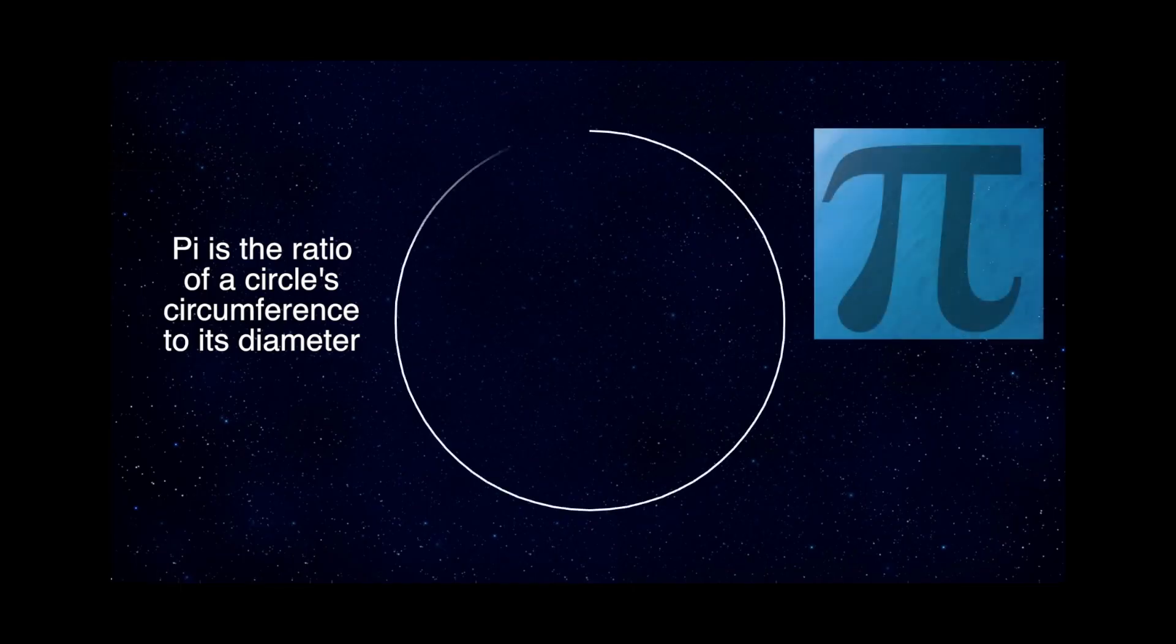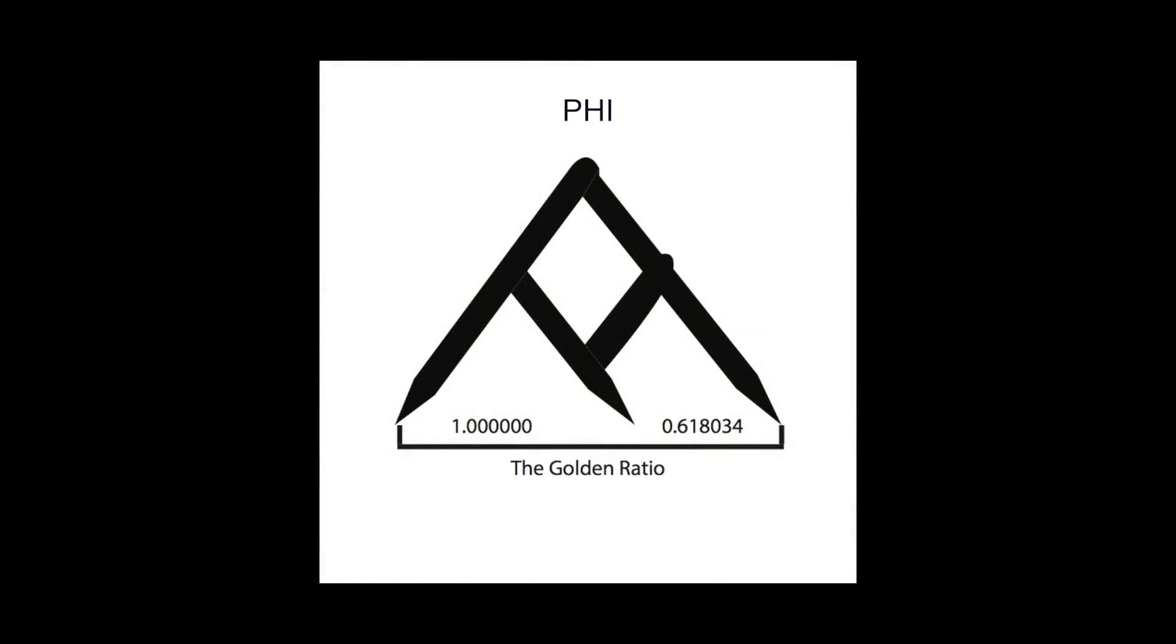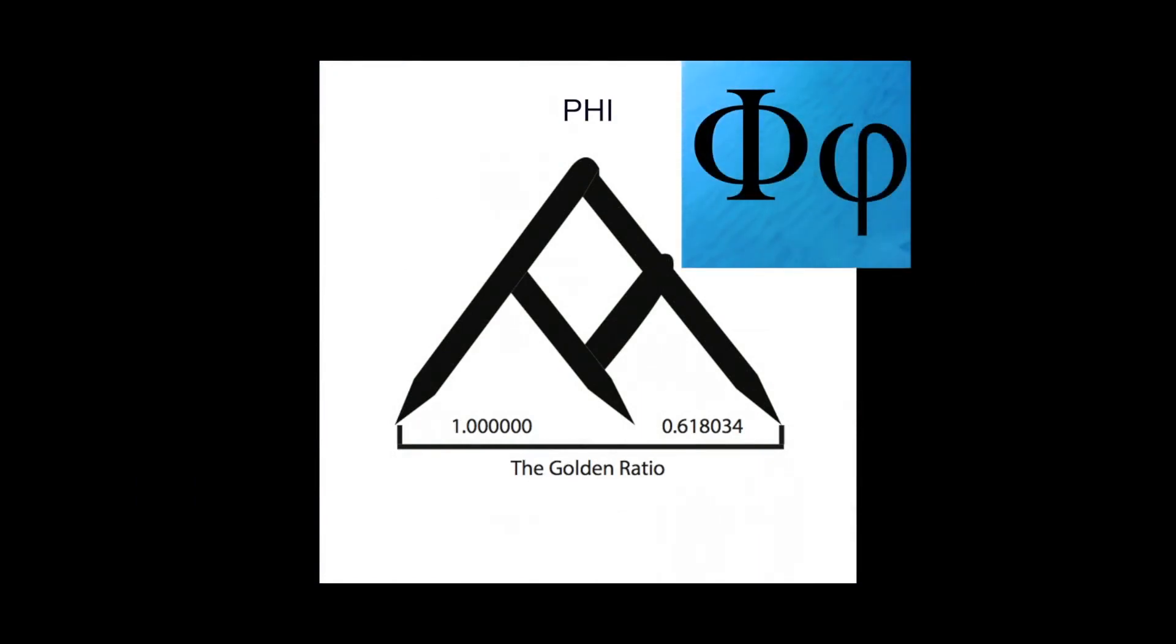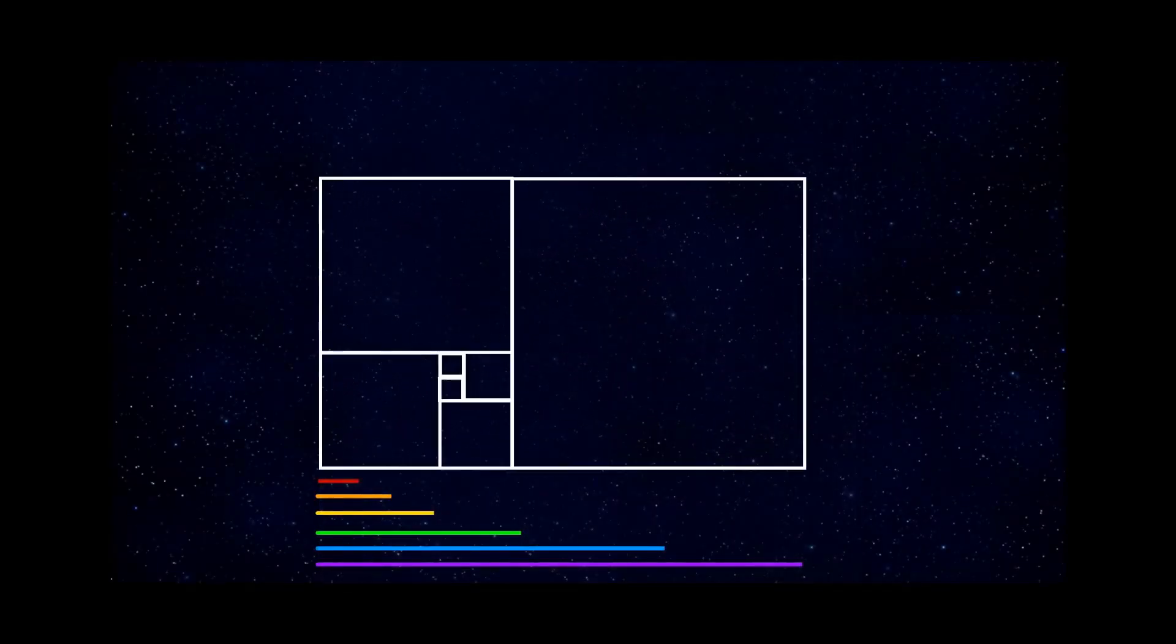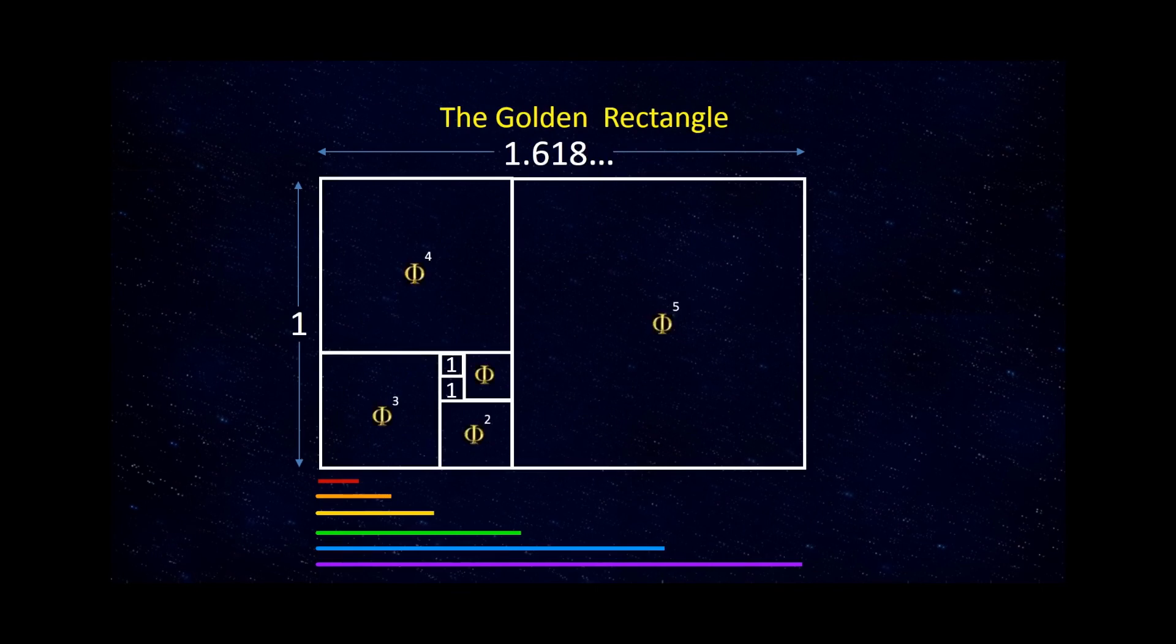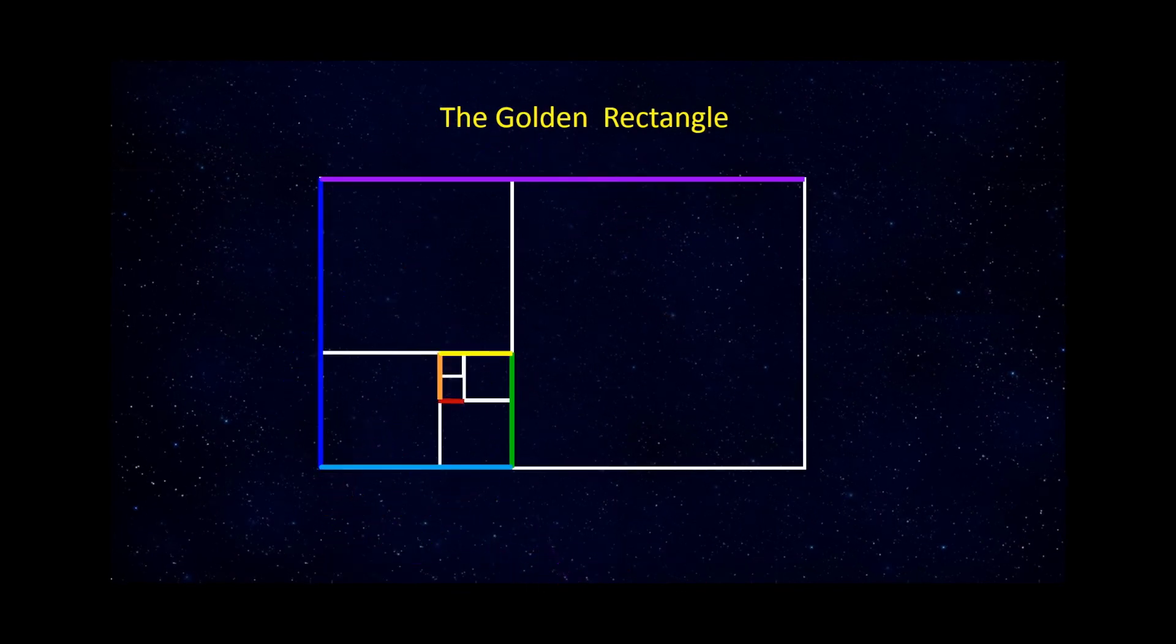Just as pi is the ratio of the circumference of a circle to its diameter, phi is simply the ratio of the line segments that result when a line is divided in one very special and unique way. Pi and phi are numbers that can represent an energy in motion, but they take no form until made into something in the material world by nature or by man.